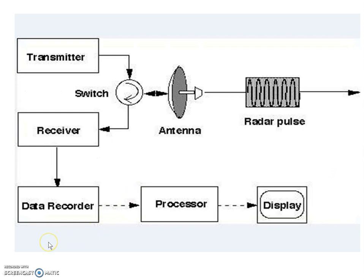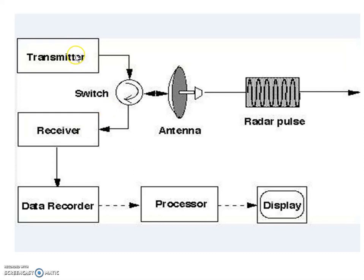This is the building block diagram for any type of radar. The transmitter produces the high power RF pulse that is radiated into space through the antenna. Here you can see a switch which is connected between the transmitter, antenna, and receiver. When a single antenna is used for transmitting and receiving, we require a switch, and that switch is called a duplexer. So the duplexer is the switch between transmitter and receiver. When the transmitter is on, the receiver will be off, and when the receiver is on, the transmitter will be off.